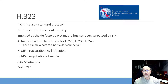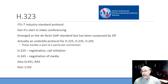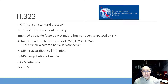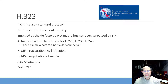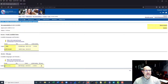H.323 also includes Q.931 and RAS as part of its signaling. Because H.323 comes from the ITU-T, which handles traditional telephony standards, Q.931 is actually ISDN — H.323 includes a packetized version of ISDN signaling. H.323 is a very complicated, enormous protocol. H.323 uses port 1720, and you can download the standard from the ITU-T website.